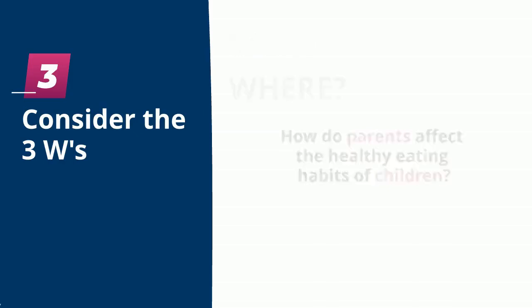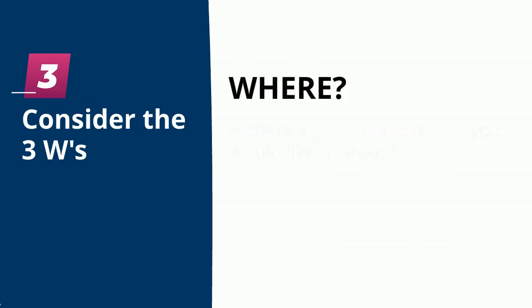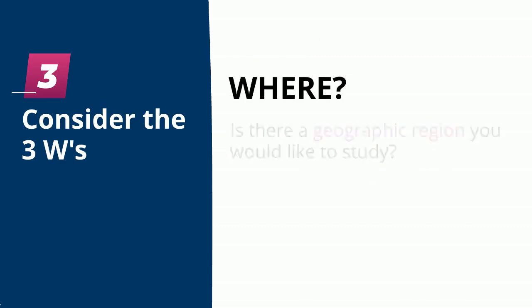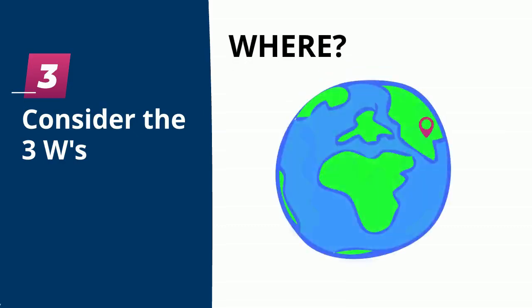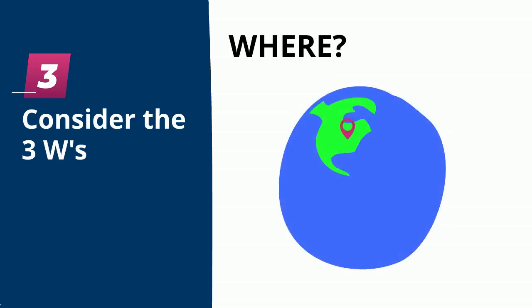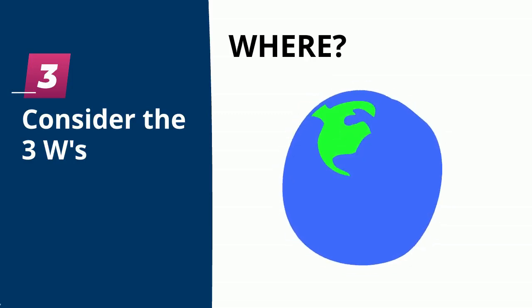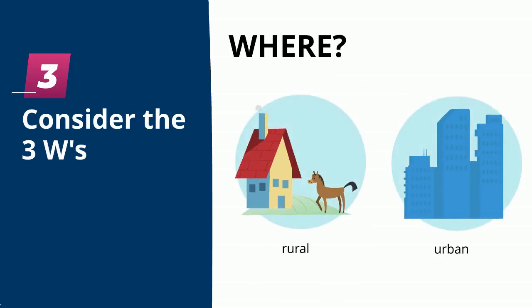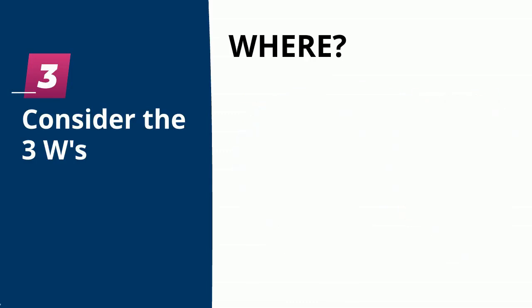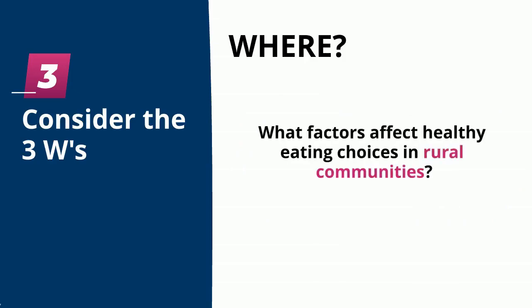Next, where? Is there a geographic region you would like to study? In the library, we collect articles from around the world. So if you want to do your research on studies from India, from China, from Australia, or from Canada, you can find them here. Other geographic regions to consider include rural or urban settings, mountain or maritime regions, and the like. For example, you might ask: what factors affect healthy eating choices in rural communities?